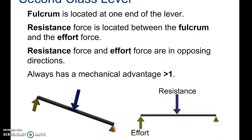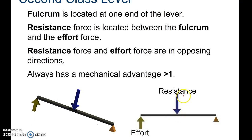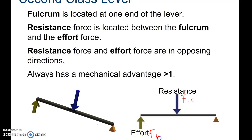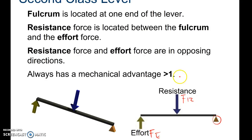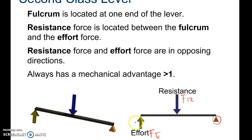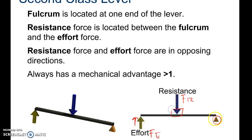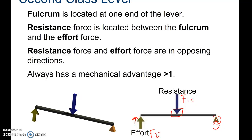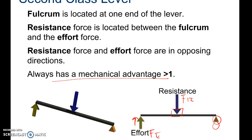A second class lever is defined as having the resistance in the middle, the effort force on one end, and the fulcrum at the other end. An example of this is a wheelbarrow — you lift on one end, the load or weight is in the middle, and the fulcrum or wheel is on the opposite end. This type of lever will always have a mechanical advantage greater than one.